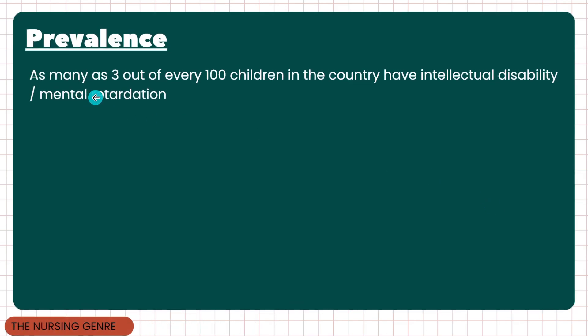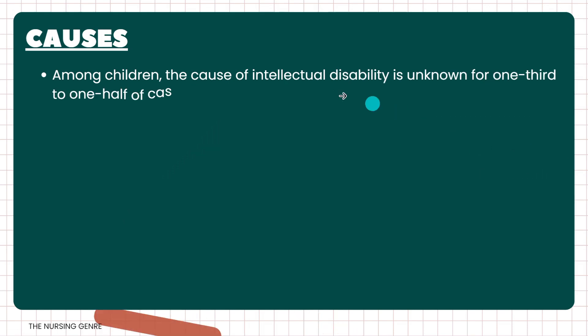Regarding prevalence, as many as 3 out of every 100 children in the country have intellectual disability or mental retardation.